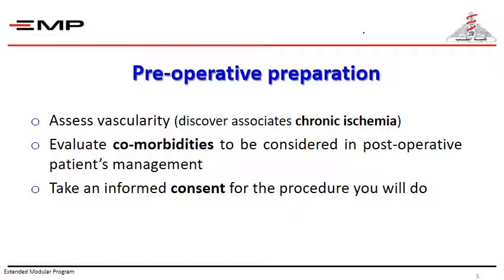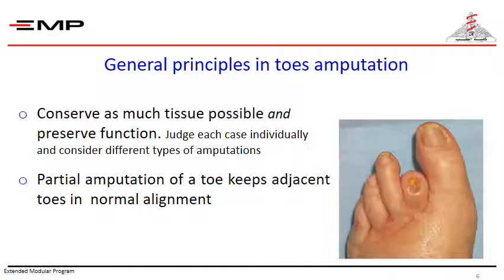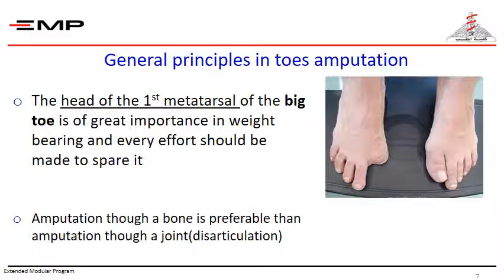Perform amputation at a level that makes anatomical sense. General principles in toe amputation: in general, the aim of the surgeon is to conserve as much tissue as possible and preserve function. Each case should be judged on its own merits. Partial amputation of a toe keeps adjacent toes in normal alignment. The big toe is of particular importance — the head of the first metatarsal is of great importance in weight bearing, and every effort should be made to spare it.